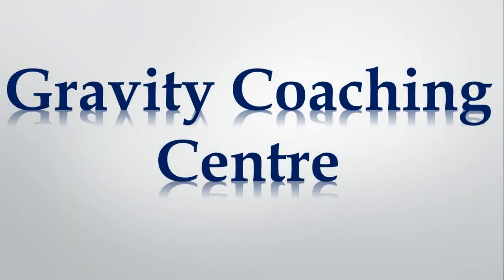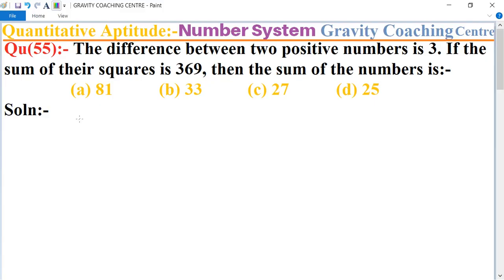Welcome to our channel Gravity Coaching Center. Quantitative Aptitude chapter Number System, question number 55. The difference between two positive numbers is 3, and if the sum of their squares is 369, then the sum of the numbers is?